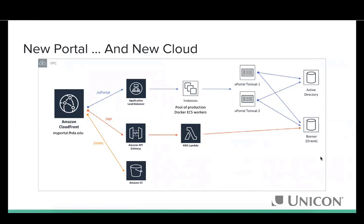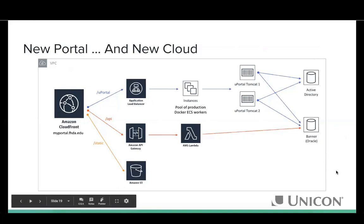As an institutional strategy they moved to the cloud, selecting AWS as their provider — also using AWS for their Banner managed service contract. A key requirement was containerization; they already had Docker and Tomcat experience. During their first training with Drew over a year ago they containerized uPortal 5 on-site, months before the official Docker files were released for uPortal Start.